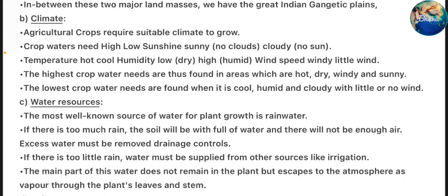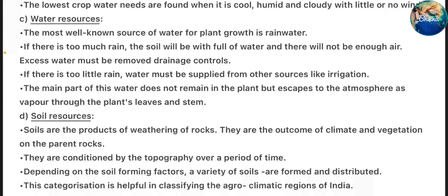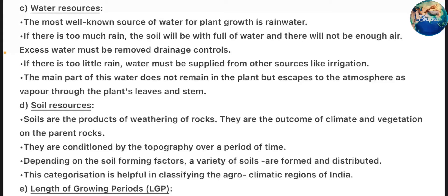Climate is a key determinant. Agriculture crops require suitable climate to grow. Crop water needs depend on: water availability (high or low), sunshine (sunny or cloudy), temperature (hot or cool), humidity (low/dry or high/humid), and wind speed (windy or little wind). The highest crop water needs are found in areas which are hot, dry, windy, and sunny. The lowest crop water needs are found when it is cold, humid, and cloudy with little or no wind.